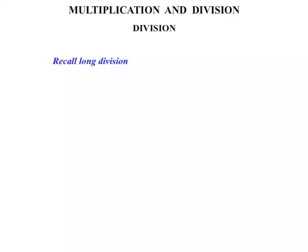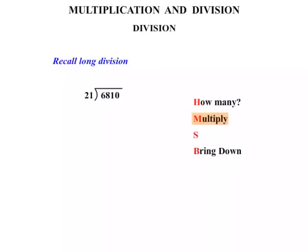Let's now consider division. Recall long division — you may not have done it for a very long time. We'll use the acronym HMS bring down: H stands for 'how many', M stands for 'multiply', S stands for 'subtract', and then 'bring down' at the end.